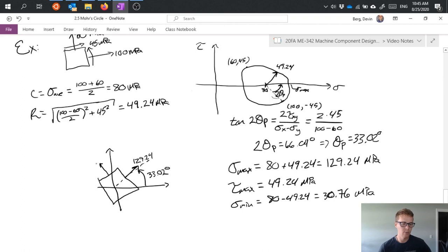My normal stress on this other face is 30.76 we know that those correspond because they're 180 degrees apart on my Mohr circle which means they're 90 degrees apart on my stress element so I can see what that looks like.